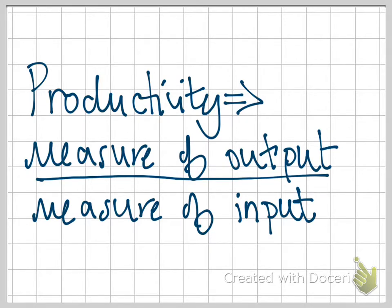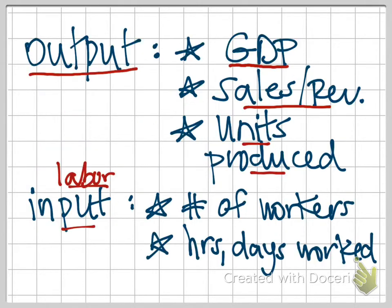There are two main reasons for this. First, labor productivity for a firm is typically their most expensive input resource. And the second reason is that labor productivity is typically very easy to measure.